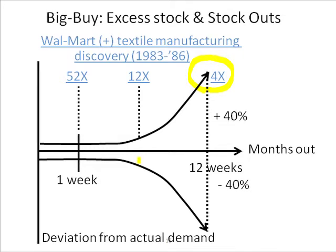If you're a distributor and you have a customer who says they're really big so they're going to buy direct, that customer risks being out on this whale tail. Because if they gave that volume to the distributor, the distributor, combined with all the other volume they're buying for all other customers, would be moving toward more and more turns — with better and better fill rates and less and less excess stock for the channel.